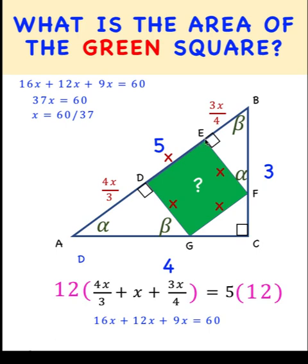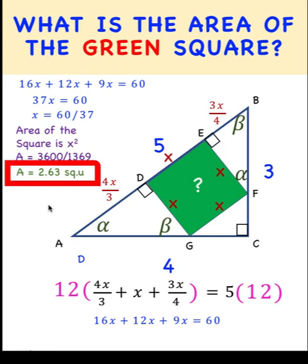So the length of the side of the green square is x equals 60 over 37, and so we can now find the area. We just have to square x. And so squaring x, we get the square of 60 equals 3600, square of 37 equals 1369. Dividing this, we get a value of 2.63 square units. And so the area of the green square is 2.63 square units. And that is now our final answer. Thank you very much, and we hope to see you again in our next video.